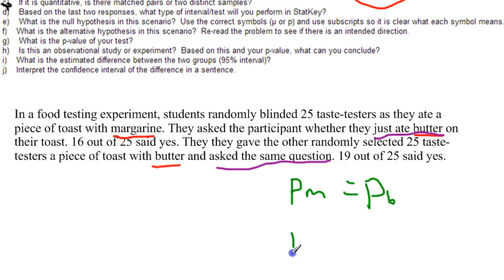The alternative is going to be very similar. We are going to have proportion for the margarine and we are going to have proportion for the butter. So P_M and P_B. And we have to decide if one of these is predicted to be bigger or if it is just going to be a not equals test. Reading the questions again, it doesn't look like there is an expectation that butter is going to be better or margarine is going to be better. So we are just going to say not equals.